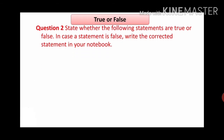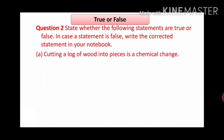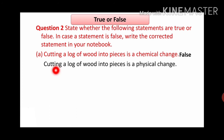Next question: state whether the following statements are true or false. In case a statement is false, write the corrected statement in your notebook. First one: cutting a log of wood into pieces is a chemical change. We are just cutting the wood and changing its shape, so this is false. The correct answer is: cutting a log of wood into pieces is a physical change.